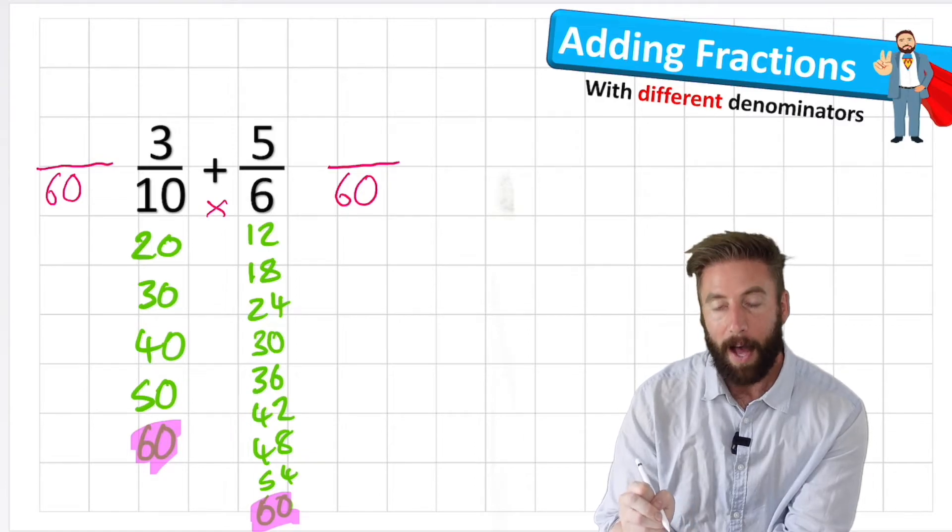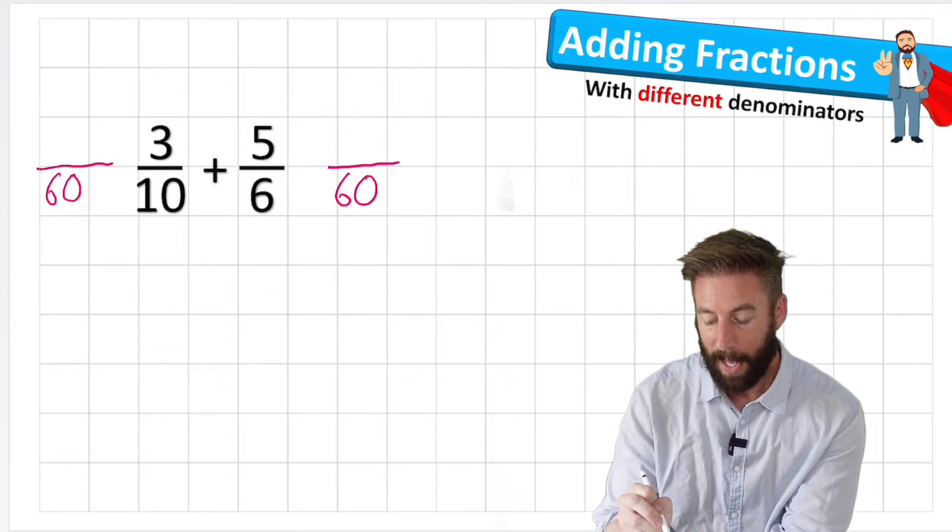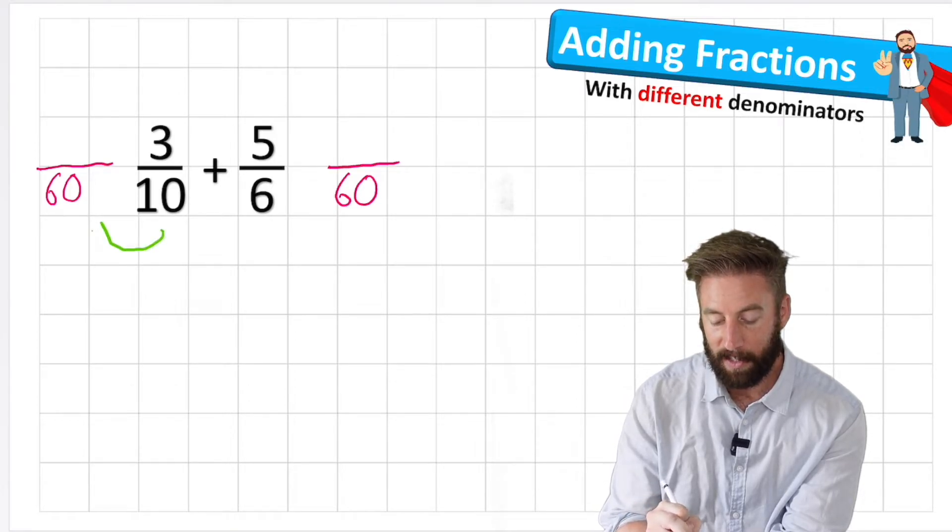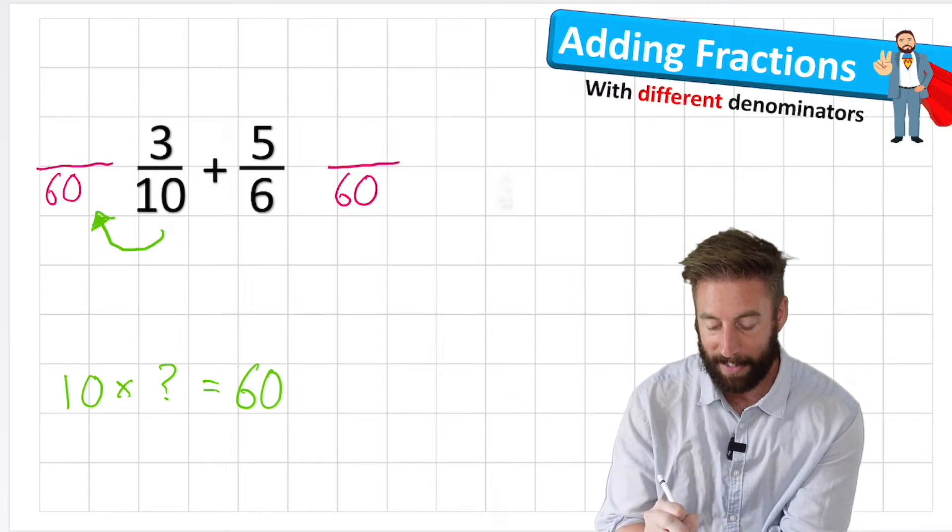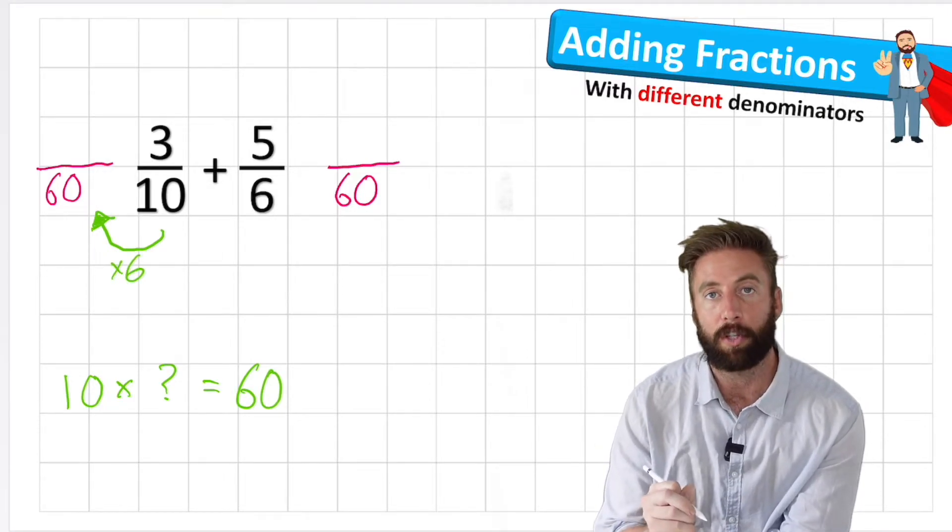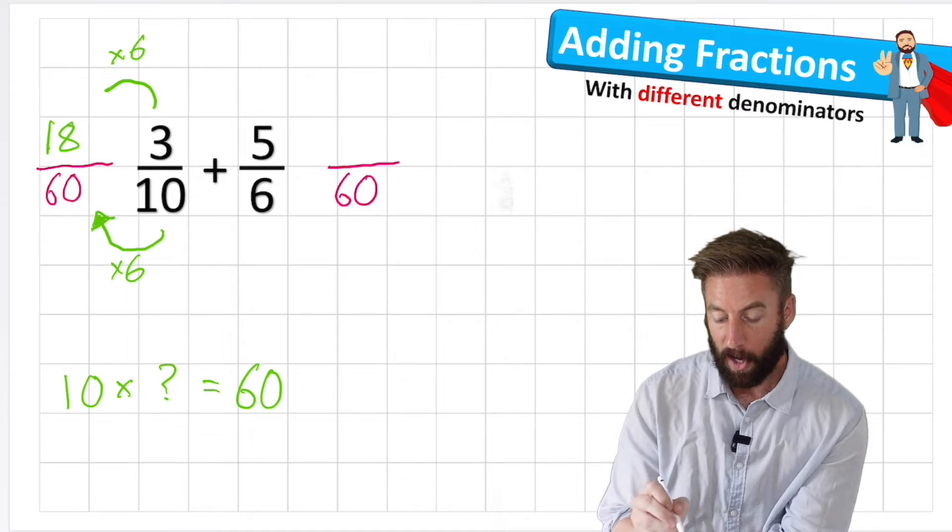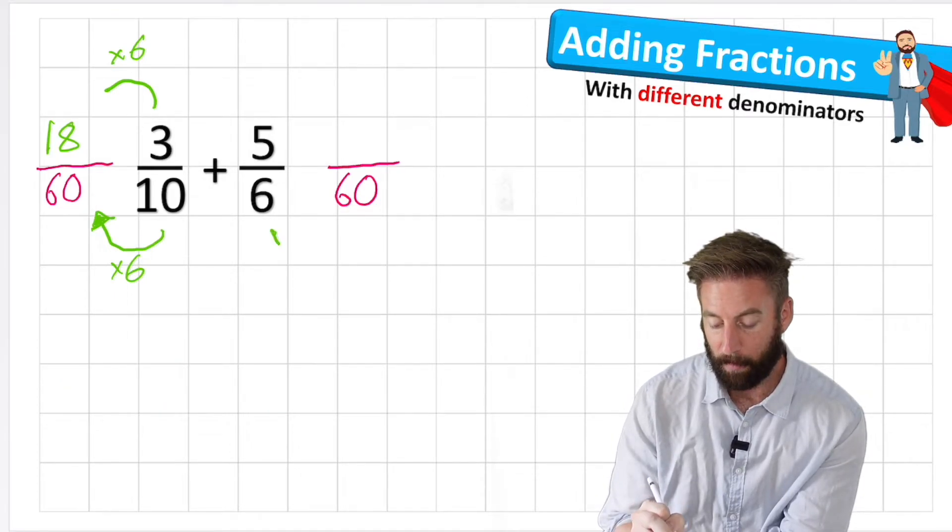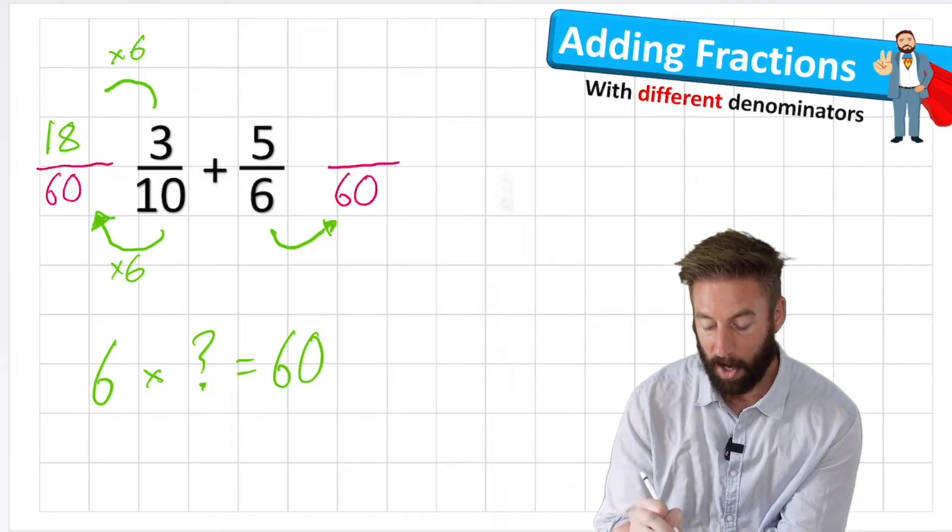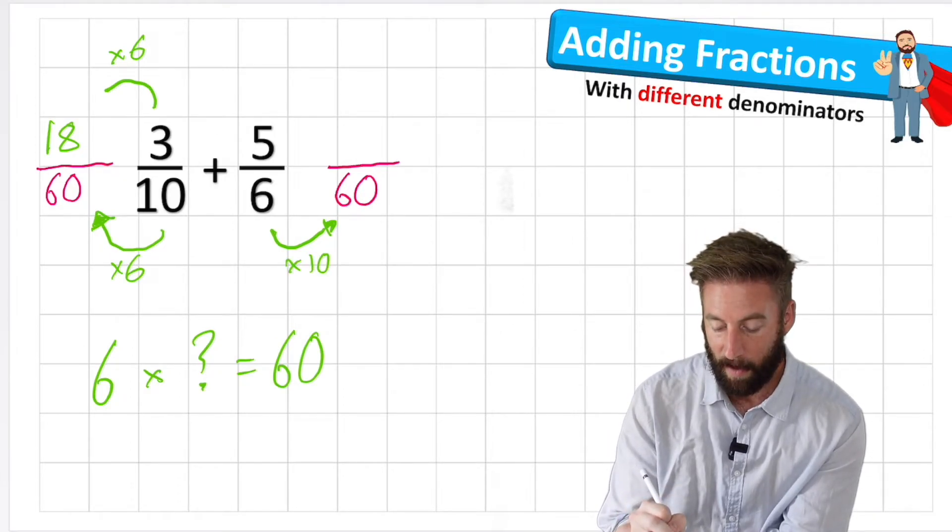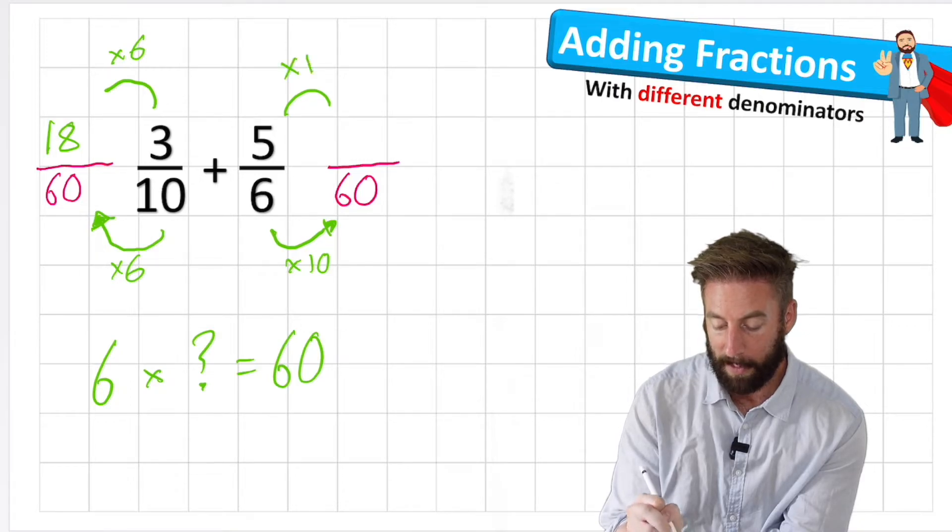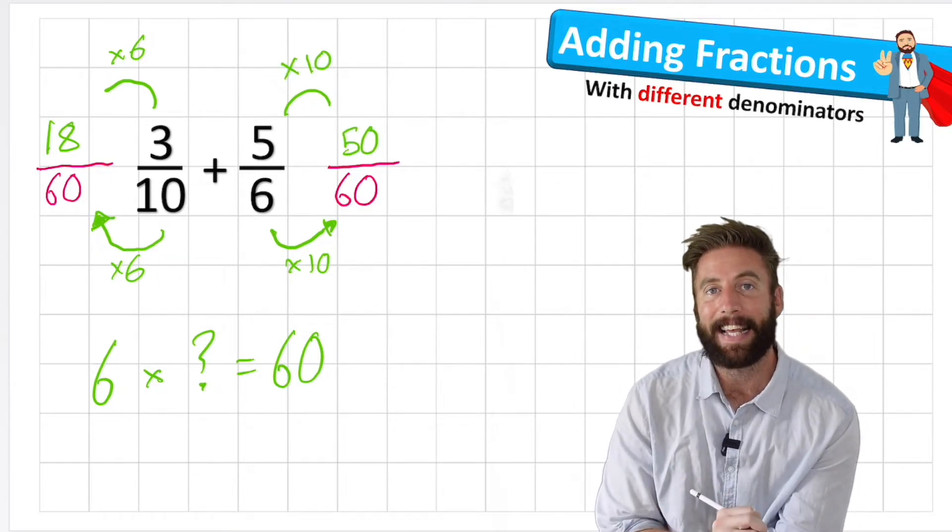So 10 times 6 is 60. So I now have my denominator of 60 and the question I'm now going to ask myself is, how did I get from 10 to 60? 10 times something equals 60. Well 10 times 6 equals 60. Therefore whatever I do to the bottom I must do to the top and 3 times 6 is 18. Now I can look at the other side: how did I get from 6 to 60? 6 times 10 equals 60. Therefore 5 also must be multiplied by 10 and it becomes 50/60.